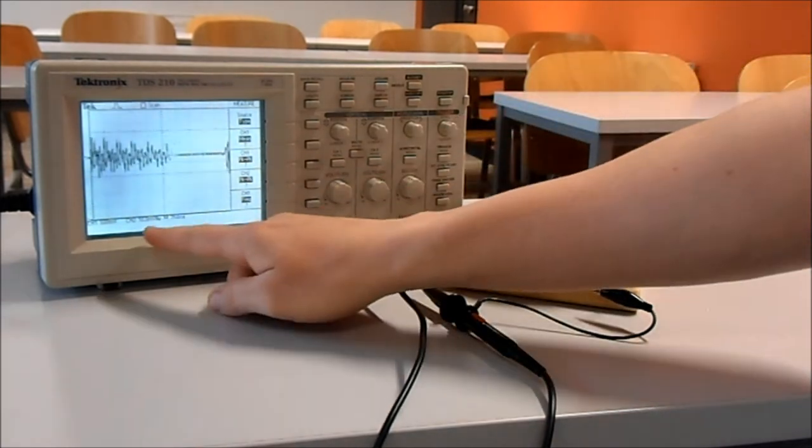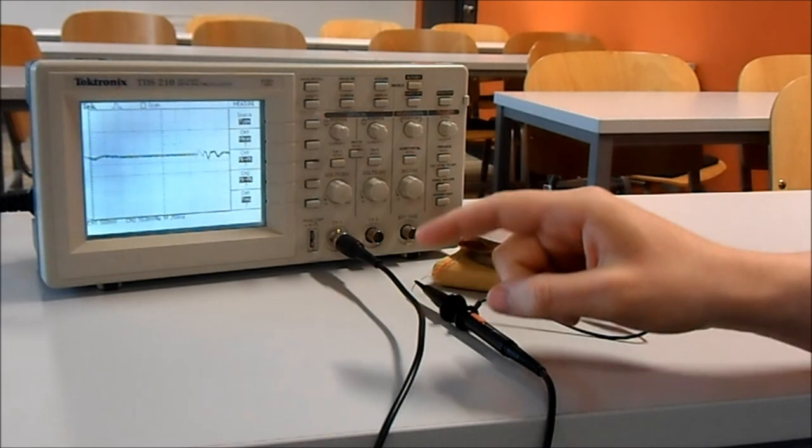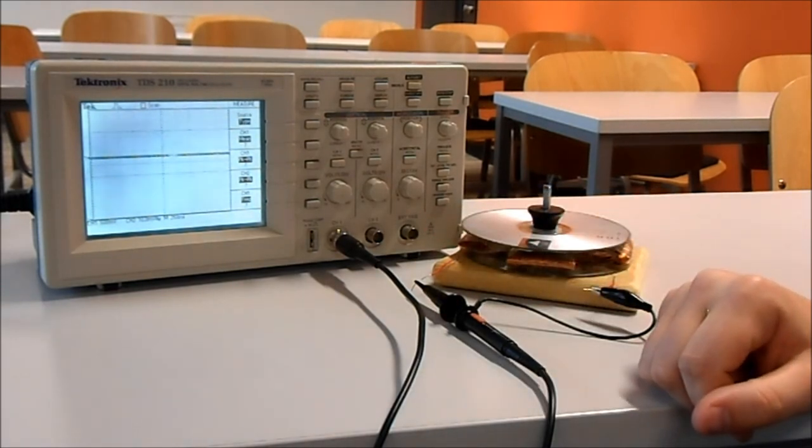Once we do that we set up the oscilloscope to 500 millivolts for the voltage and 250 milliseconds for the time.